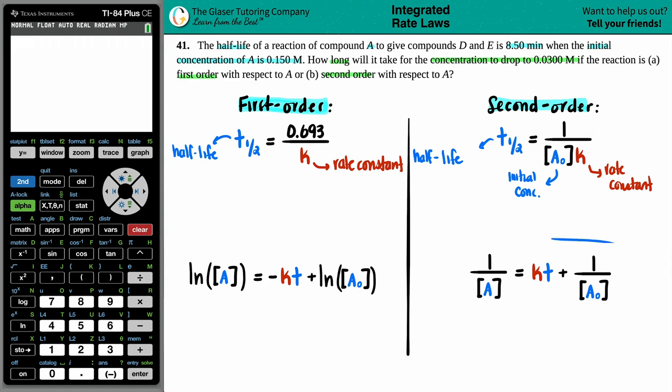If we come down here, we have two integrated rate law formulas, one for first-order, one for second-order. This is your general equation that will tell you an arbitrary amount of time, which is T, to go from an initial concentration, which is A0, down to a final concentration. And it turns out that both of these have a rate constant in them.